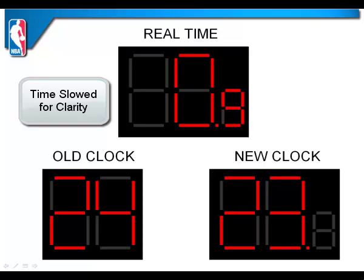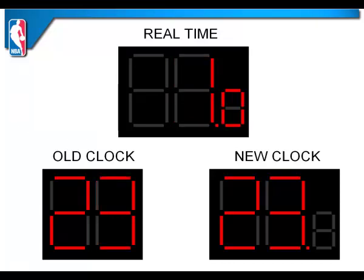Here we've reached one full second in the countdown. You'll notice that both clocks show 23 seconds — every full second, both clocks will align. But once we've advanced one-tenth of a second more, you'll notice the new clock moves to 22 while the old clock remains on 23. This is a recurring theme as the countdown commences: each full second, the clocks will align.